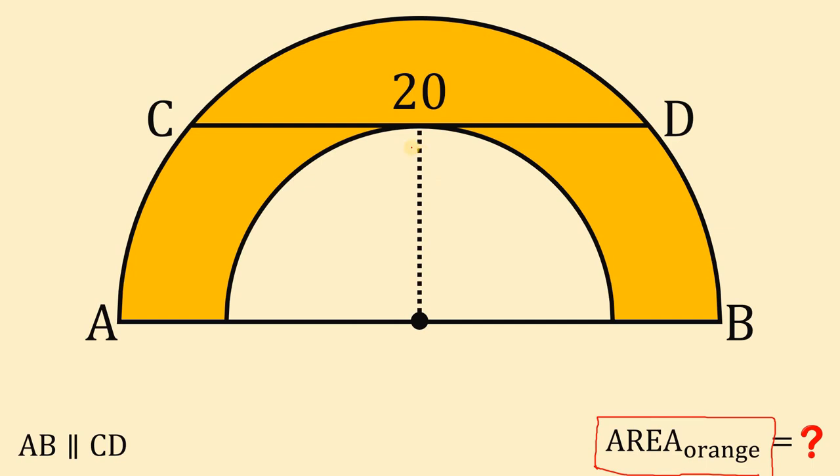Take note that this radius is perpendicular to chord CD, because this chord is tangent to the small semicircle. Now, we're going to apply some properties of a chord.